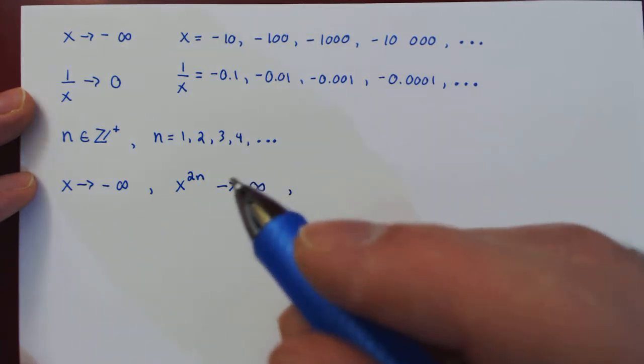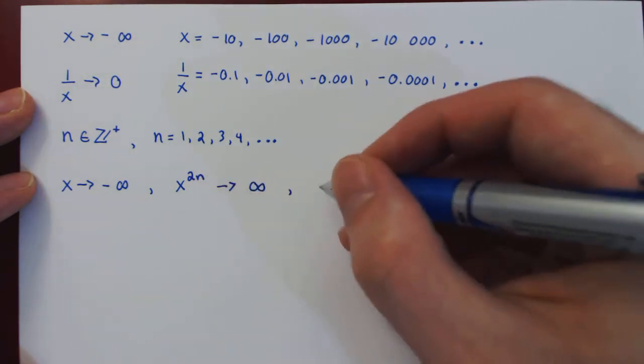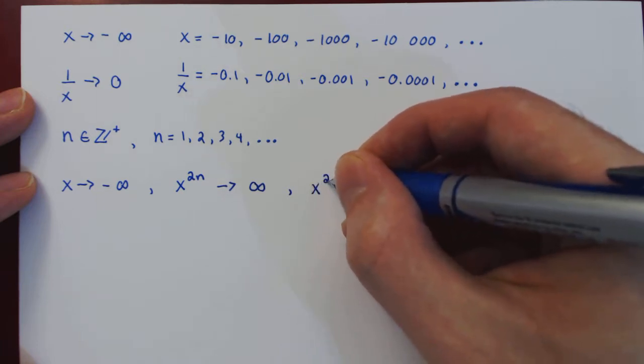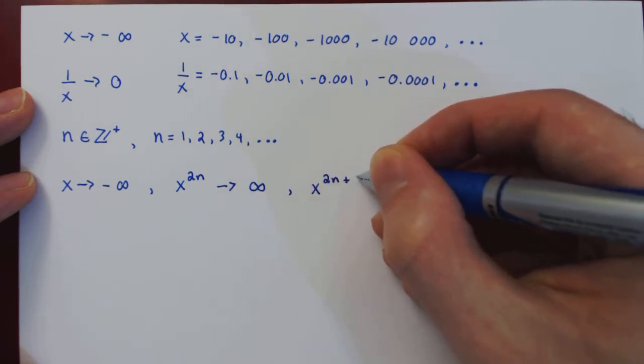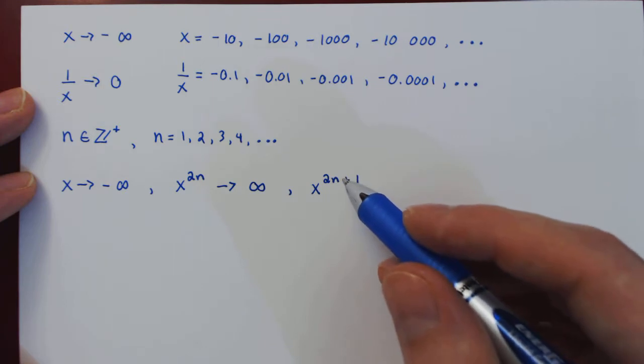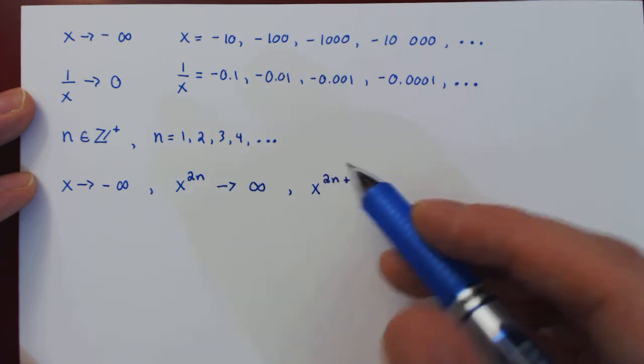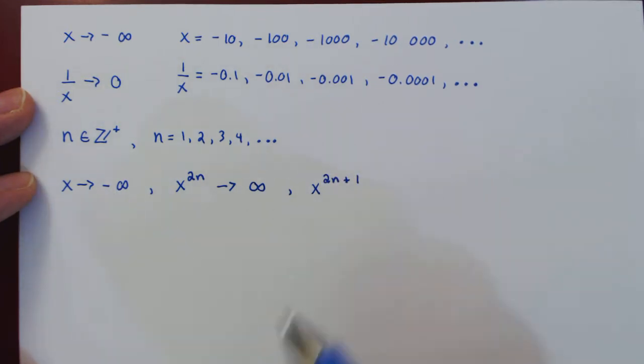On the other hand, if we take a positive but odd power of x, an odd number, of course, is a multiple of 2 plus 1. If we now take an odd power of a negative, it remains a negative.